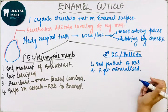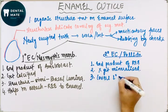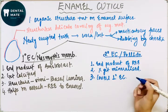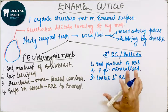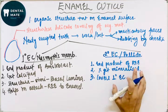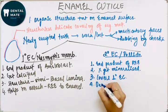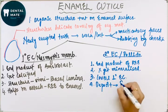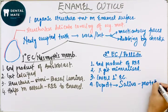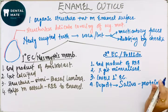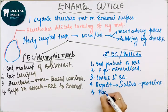The secondary enamel cuticle covers the primary cuticle. Along with this, salivary proteins are deposited on the tooth surface due to ionic interactions. These salivary proteins can be colonized by bacteria to form dental plaque.